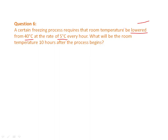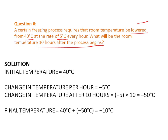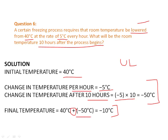The question asks: what will be the room temperature 10 hours after the process begins? The initial temperature was 40 degrees Celsius. We will apply the unitary law — which you've learned from 5th class. For 1 hour: minus 5 degrees Celsius. So for 10 hours, multiply: minus 50 degrees Celsius. Finally we combine them by adding: 40°C + (−50°C) = minus 10 degrees Celsius.